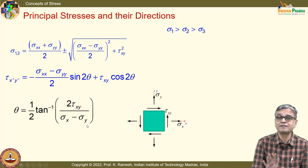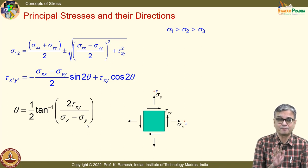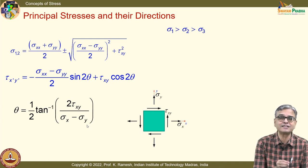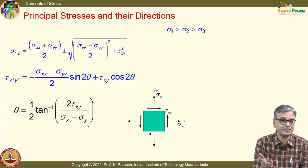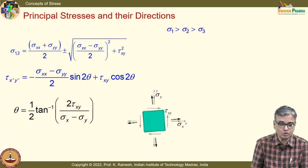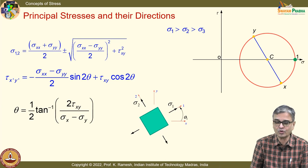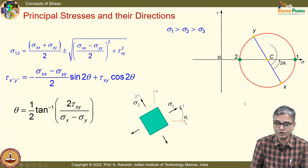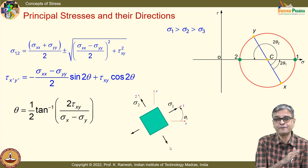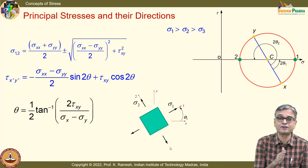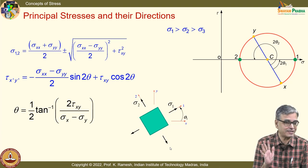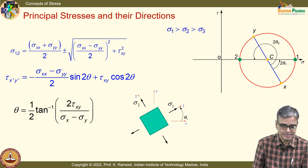What you get as θ is not θ₁, and the second value is not θ₂. You must go to the Mohr circle to find out how to locate θ₁ and θ₂ — which is the acute and which is the obtuse angle. On the other hand, if you go by the Eigenvalue–Eigenvector route, you do not have this difficulty.